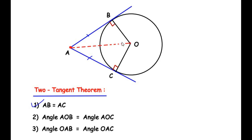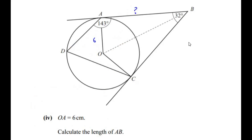Additionally, the line connecting the external point to the center of the circle divides the central angle into two equal halves, and it also divides the angle at the external point between the two tangents into two equal halves. So if angle AOB equals x degrees, then angle AOC also equals x degrees. Similarly, if angle BAO equals y degrees, then angle CAO also equals y degrees.